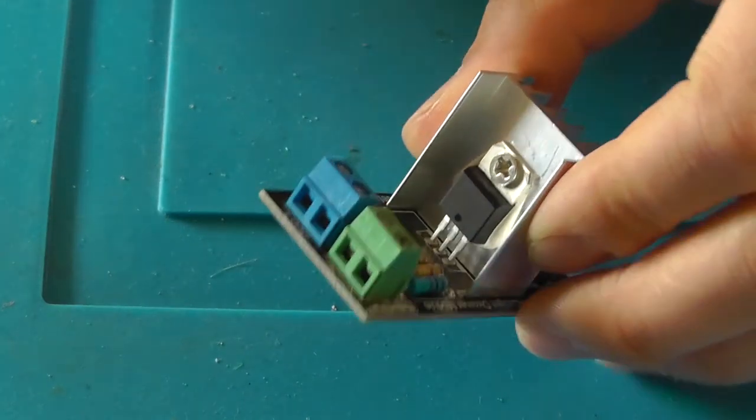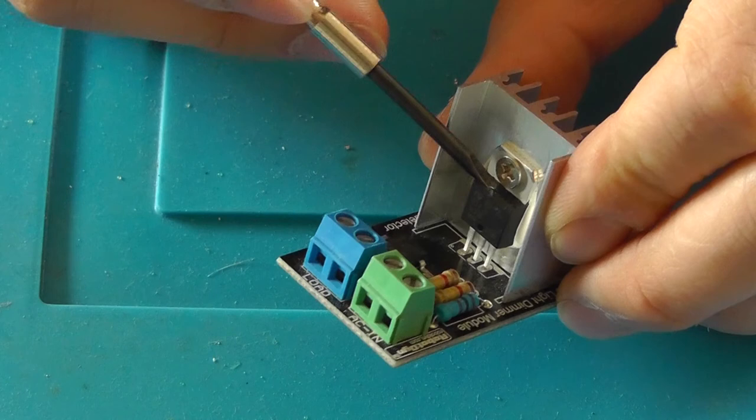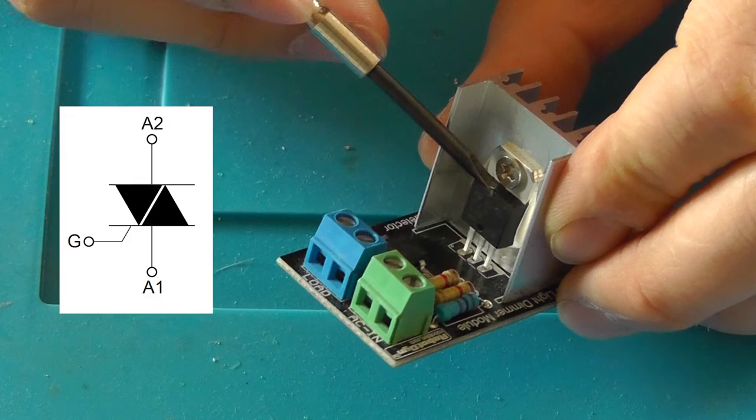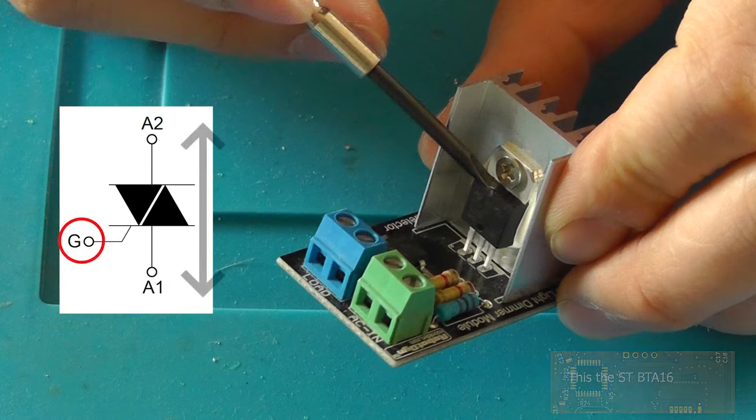First we take a look at this board. As you can see right here, there is a device on the board called a triac. On the left you can see the symbol of a triac, and the triac used on this board is the STPTA16, which stands for 16A. In order to control the triac, you need to apply a voltage to the G pin, which allows current to flow between pin A1 and A2.